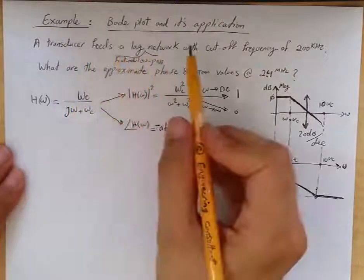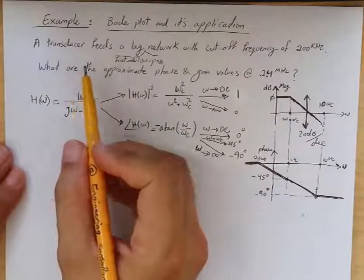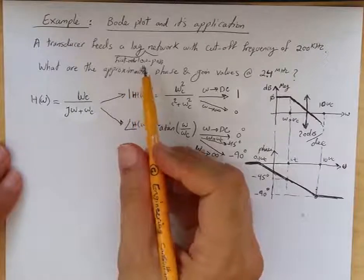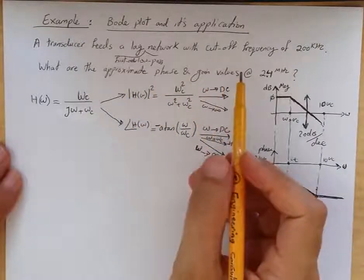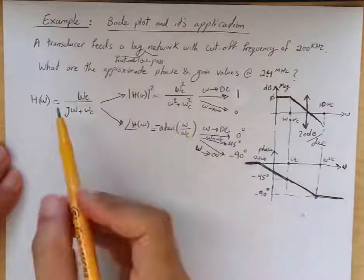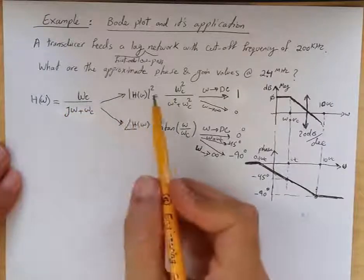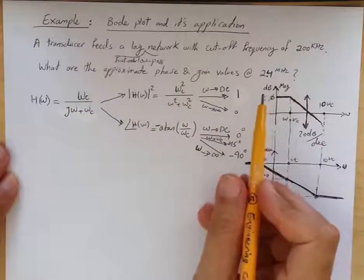Here is an example of Bode plot and its application. A transducer feeds a first-order low-pass lag network with cutoff frequency of 200 Hz. The question is, what are the approximate phase and gain values at 2.4 MHz?